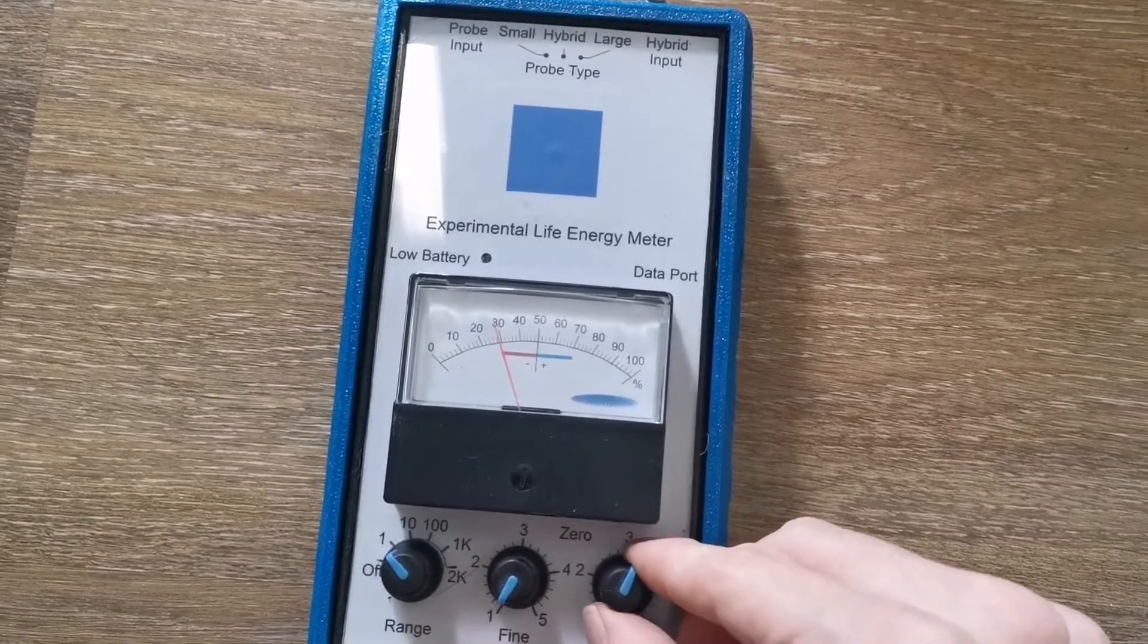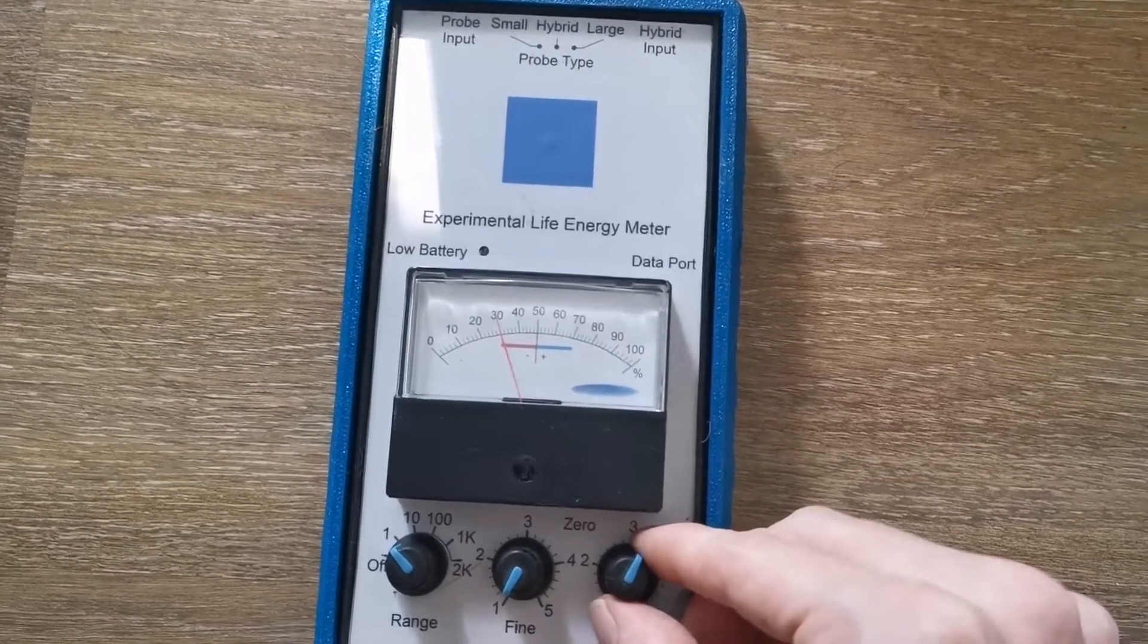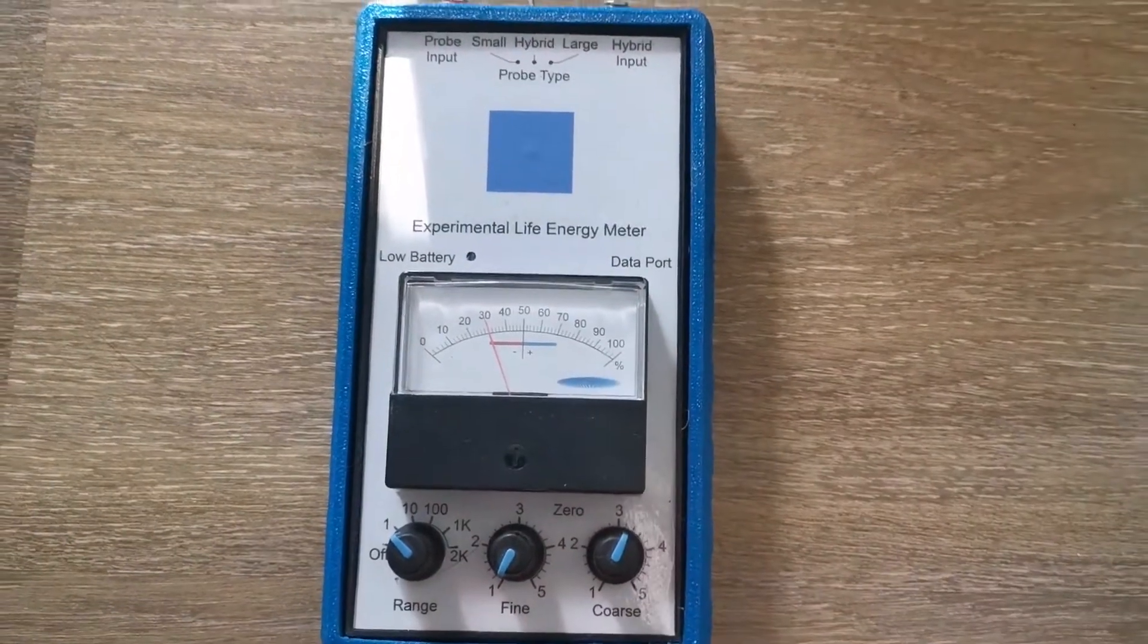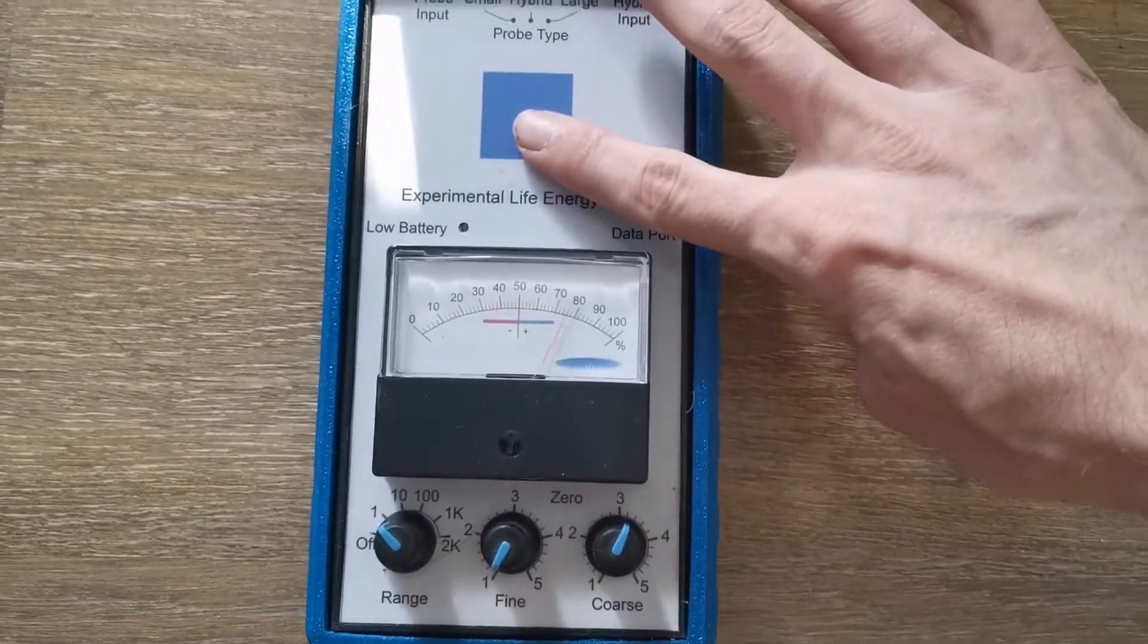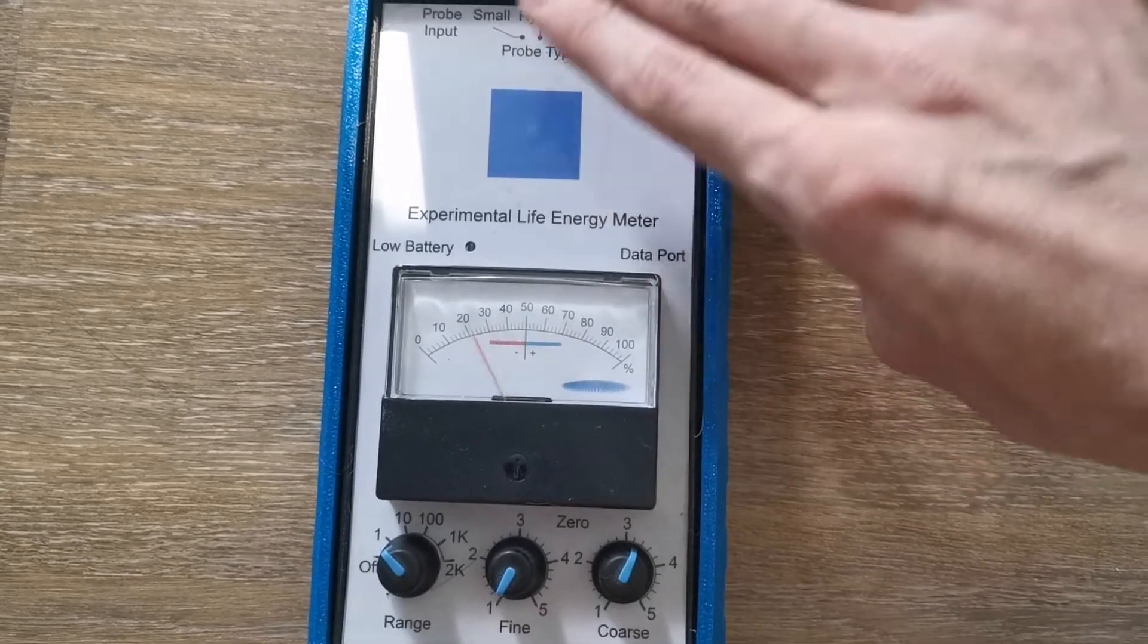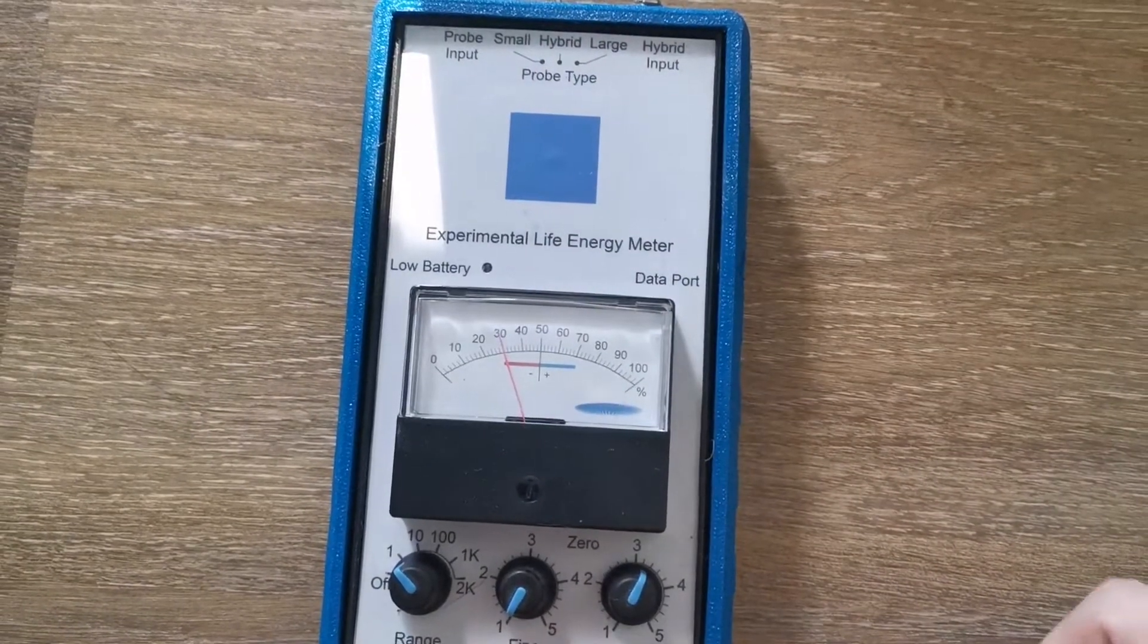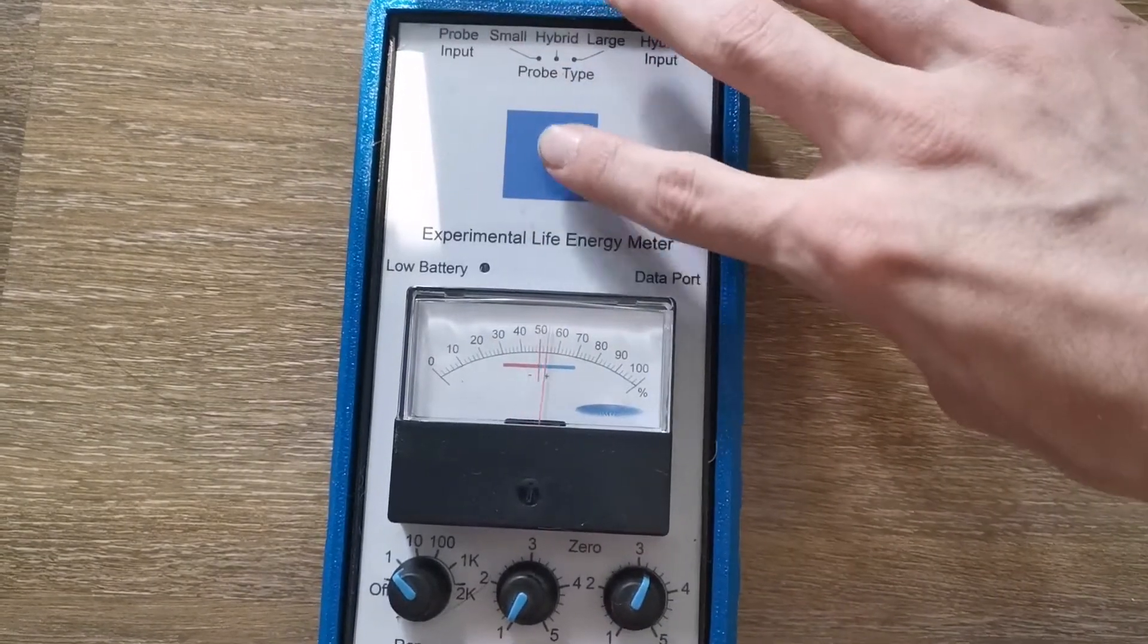What we basically do here is we set a point where we want our needle to be, and here is our censoring part. As you can see, it centers my fingers. And here we put our objects on it.